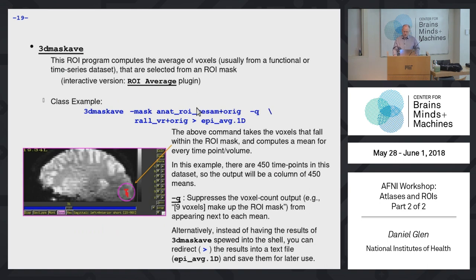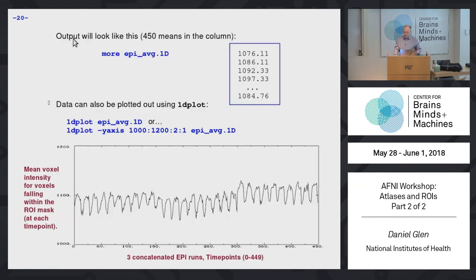Other things you can do with ROIs: use 3D Maskave to get the average at every time point within a region. Give it the volume-registered EPI data set and redirect the output to a 1D text file — every row is just the mean across the ROI. You can then plot it with 1D Plot. This is a very commonly used tool in AFNI for getting averages across your regions.